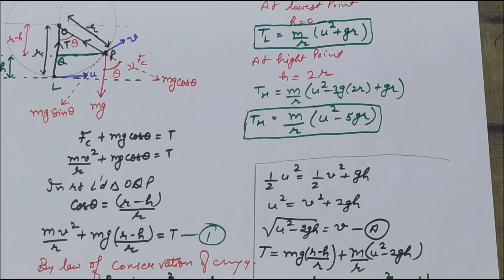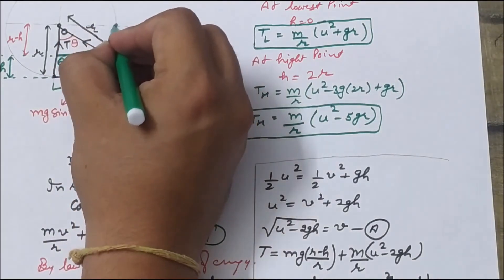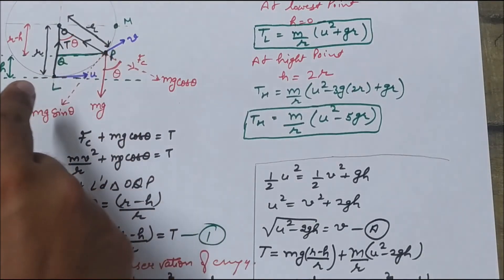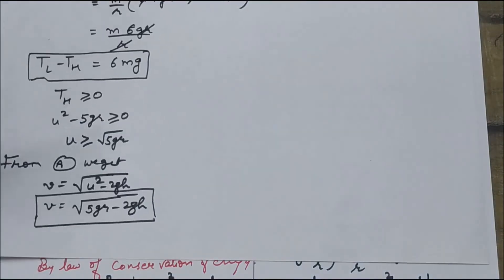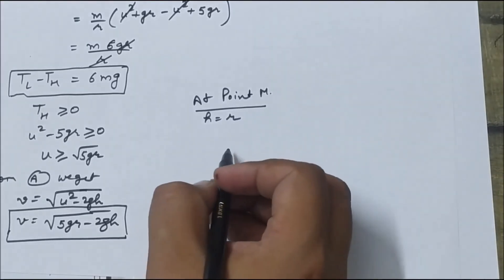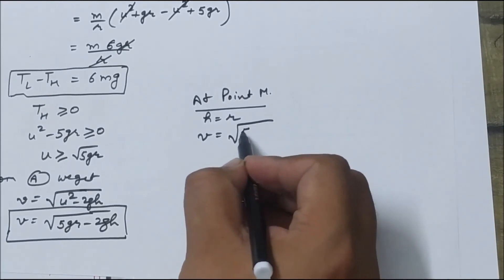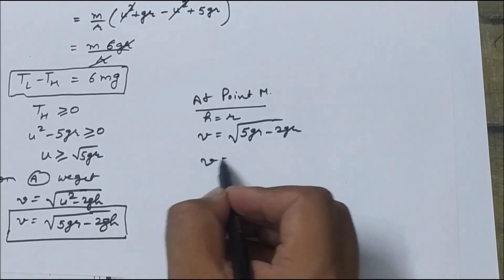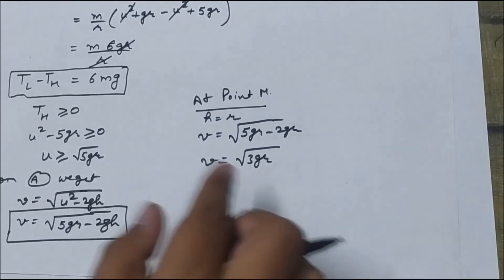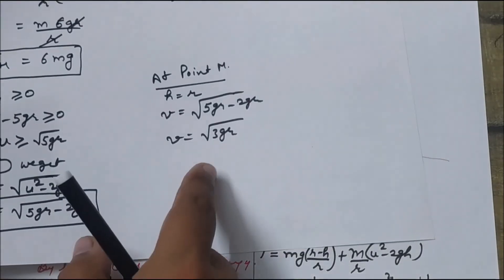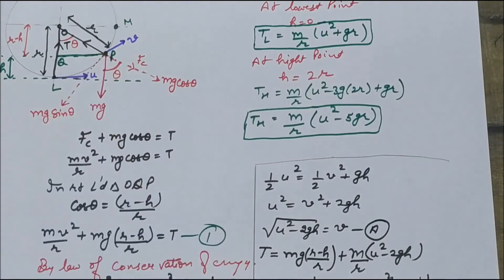To find v at point M: the value of h at point M is exactly equal to small r. Substituting h equals r, v comes out to be root of (5gr minus 2gr), which equals root 3gr. So the instantaneous velocity at point M is root 3gr.